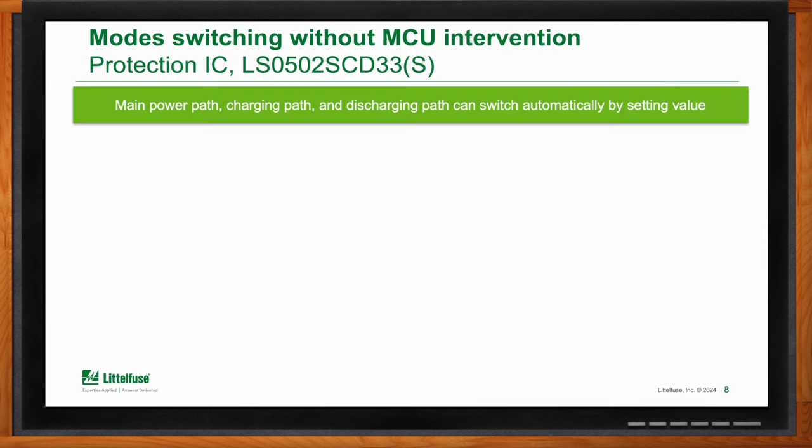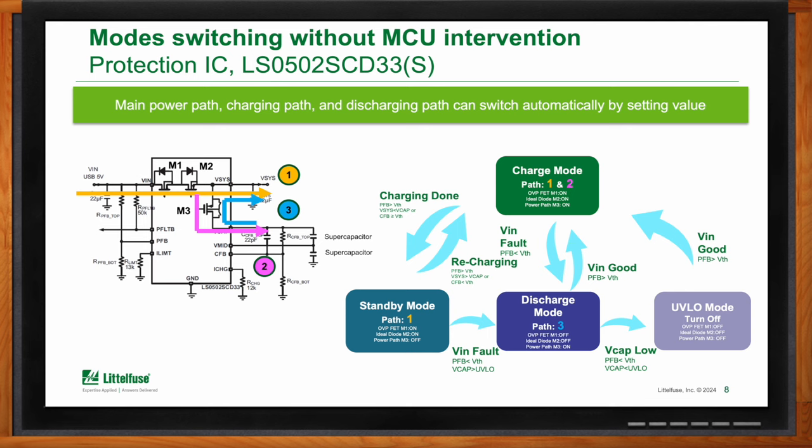The chip operates in one of four modes, and depending on what is happening in the system, it may switch between modes. During normal operation, the system load receives power from the input source, while the supercapacitor is automatically charged with a controlled current and voltage level from the input power. In an event of input power loss, the LS0502 will automatically transition into backup operation mode and generate a fault signal, depicted by the PFLTB pin, to inform the system of the input power failure. In backup power mode, the power supply is automatically switched to the supercapacitor, ensuring a reliable backup power source to the load.